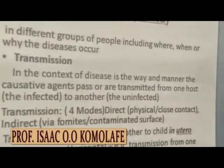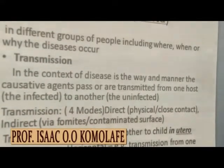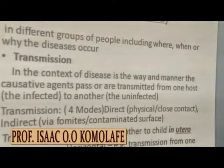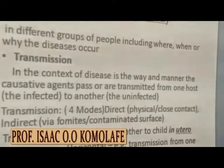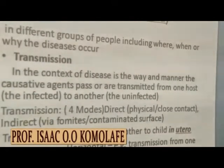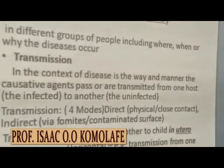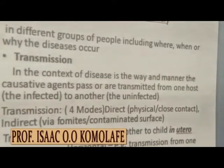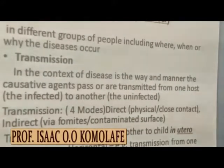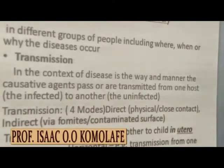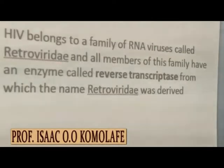Transmission can also be vertical — that is, from mother to child in utero. When the baby is still in the womb, HIV can be transmitted from the mother to the child via the placenta. Or it can be horizontal — that is, transmission from one individual to another.